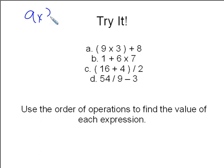9 times 3 equals 27. Plus 8 equals 35. So A equals 35.